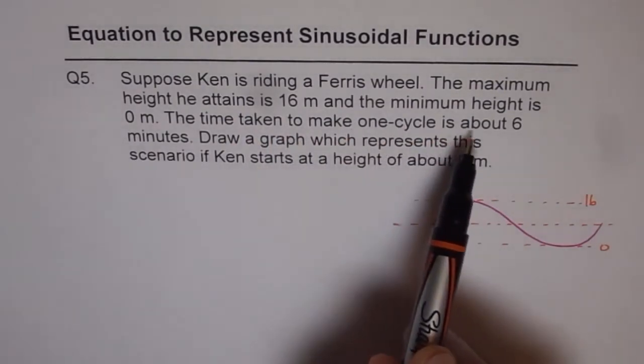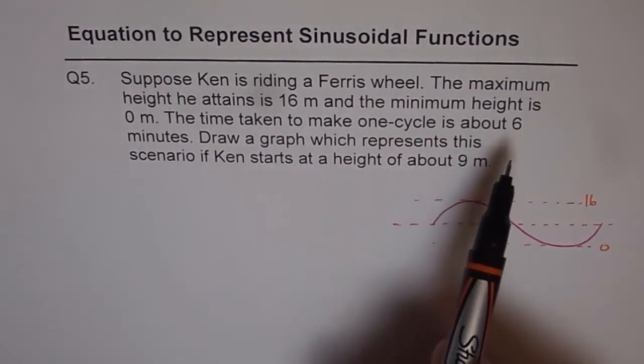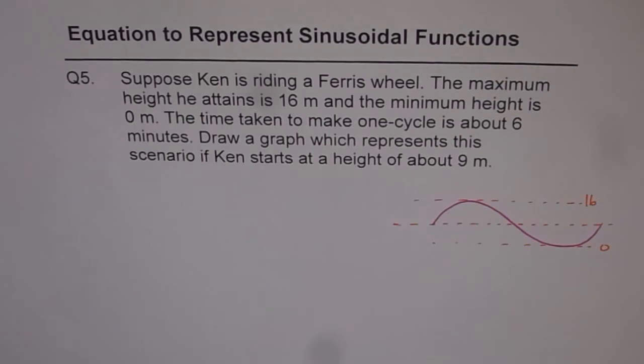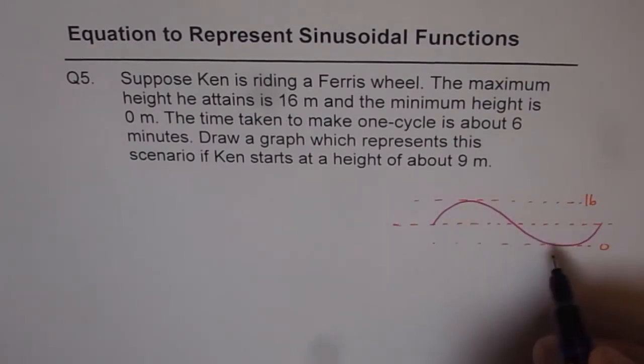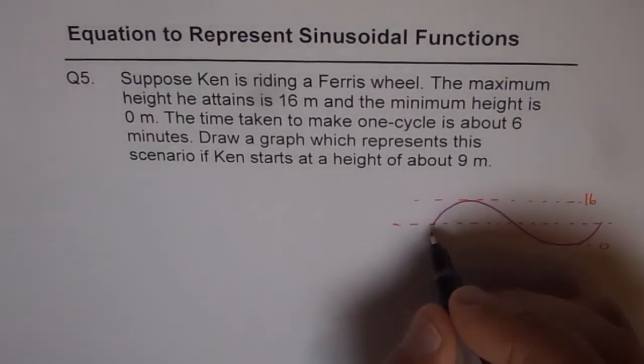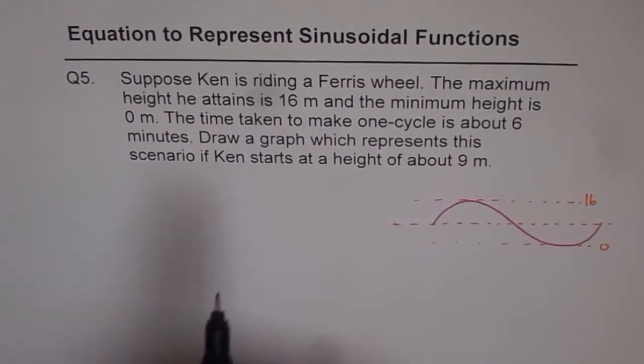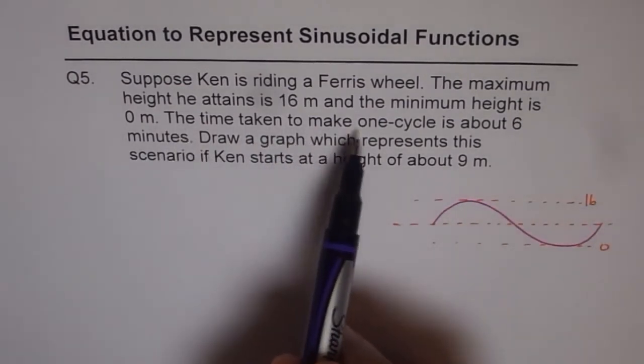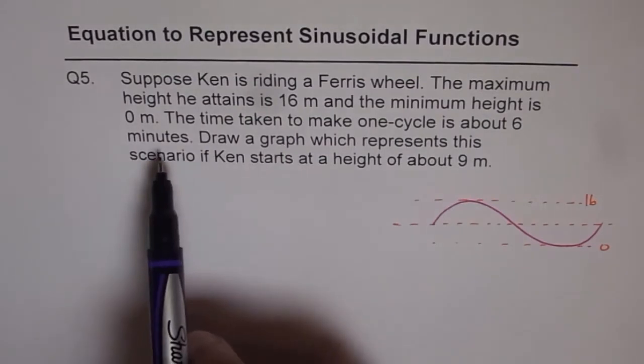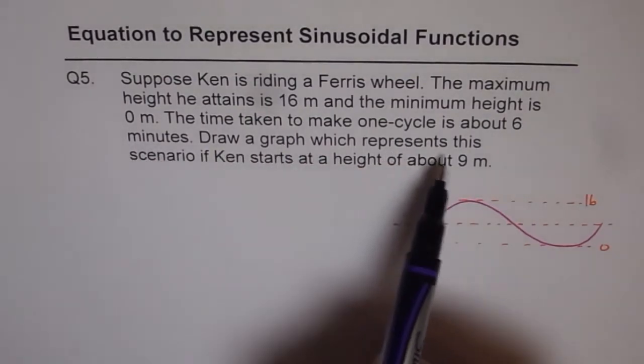Time taken to make one cycle is about 6 minutes. So let us say that is the starting point. Then the time taken is 6 minutes. Well, we really don't know what the starting point is. Let's draw the graph which represents the scenario.